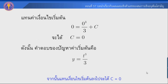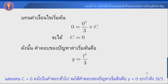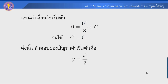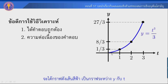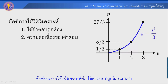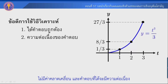จากนั้นแทนเงื่อนไขเริ่มต้นจะได้ C มีค่าเป็น 0 แทน C = 0 ลงไปในคำตอบทั่วไป จะได้คำตอบของปัญหาค่าเริ่มต้นนี้คือ y = t³/3 เราลอง plot คำตอบ y = t³/3 จะได้กราฟเส้นสีฟ้าเป็นกราฟระหว่าง y กับ t.